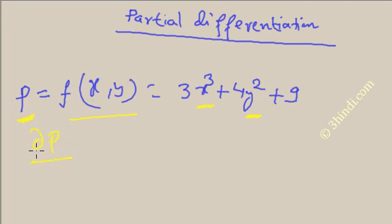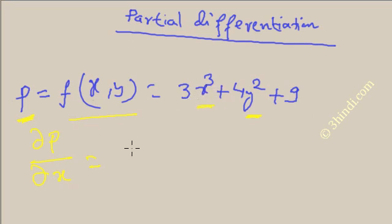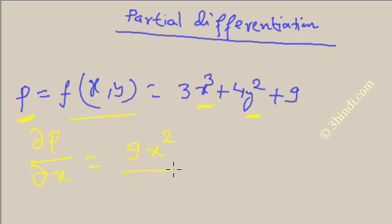The notation is written as del p by del x. You just treat x as a variable and everything else is constant. So if x is a variable, differentiating gives 9x². Because y is assumed constant, the differentiation of 4y² will be 0, and differentiation of 9 will be 0. So finally, del p by del x is equal to 9x².